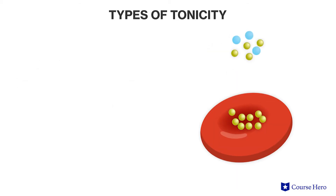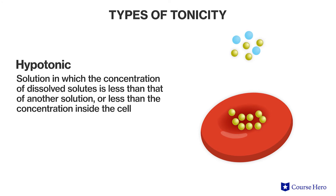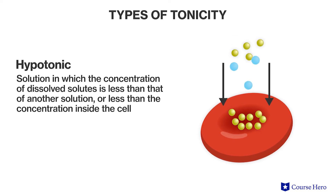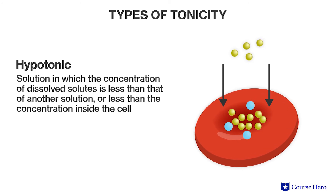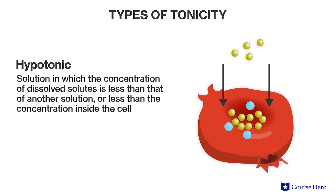When a cell is in a hypotonic solution, the extracellular fluid has a lower osmolarity than the fluid inside the cell. In this case, solute concentration in the extracellular fluid is lower than the solute concentration inside the cell. This results in water moving into the cell and the cell swelling. If the concentration difference is extreme and excess water is not removed, cells may burst or lyse.